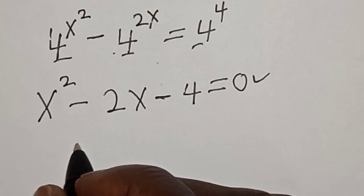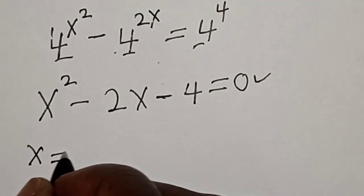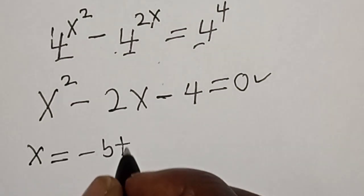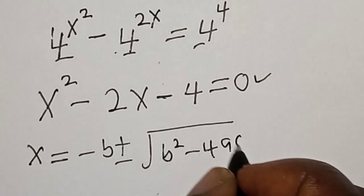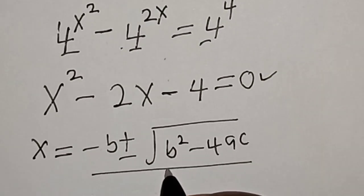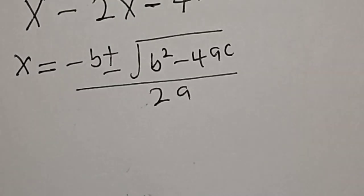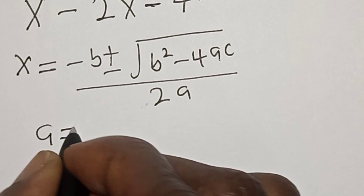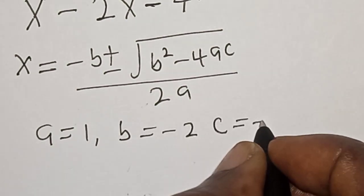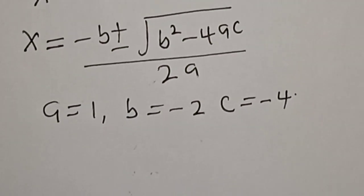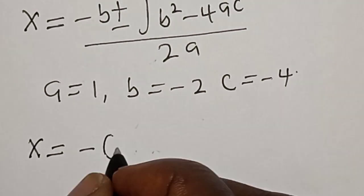We solve using the quadratic general formula: s equals negative b plus or minus square root of b squared minus 4ac, all divided by 2a. Here a equals 1, b equals negative 2, and c equals negative 4.